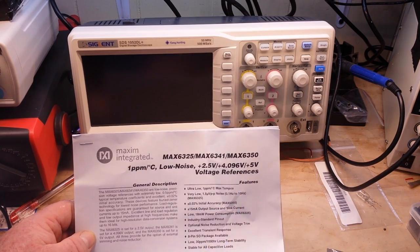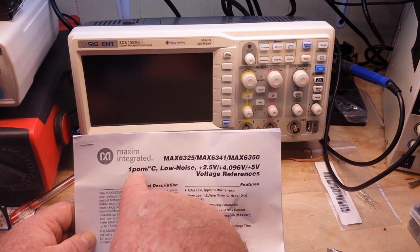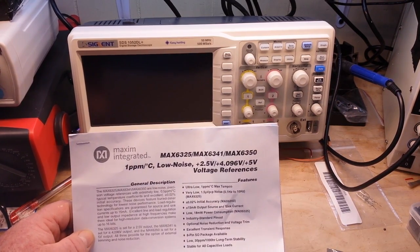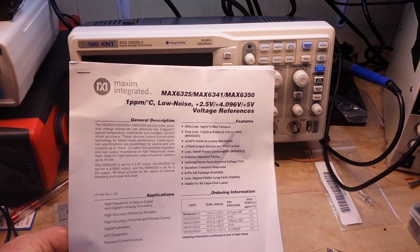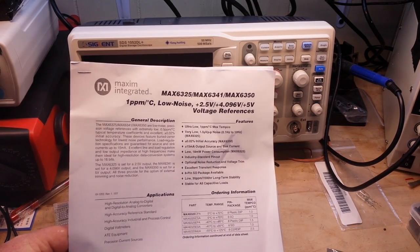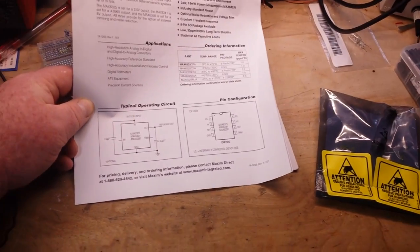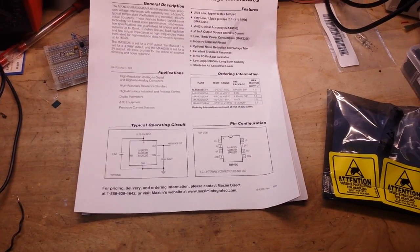So this is the MAX6325. I believe it is a low noise 2.5 volt plus 4.096 volt plus 5 volt voltage reference, and it's one part per million. So that's pretty sweet. We can hook up a little circuit here.